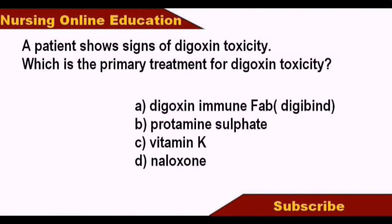A patient shows the signs of digoxin toxicity. Which is the primary treatment for digoxin toxicity? Options: first, Digoxin Immune Fab or Digibind; second, Protamine Sulfate; third, Vitamin K; fourth, Naloxone.